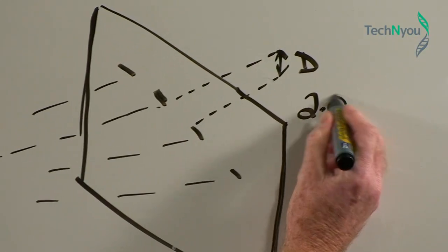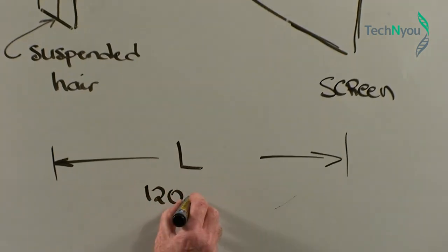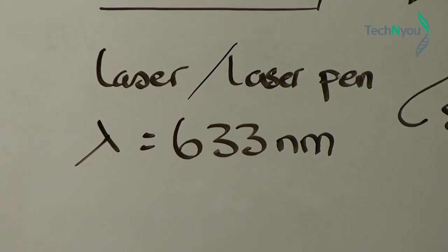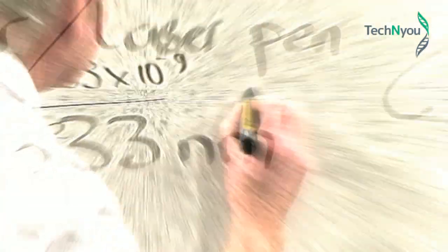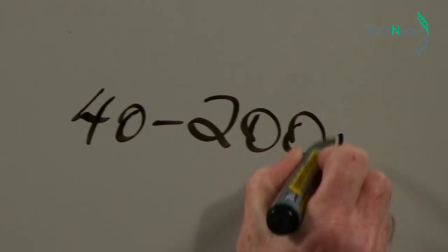Let's put some values into the formula. If D is two centimetres, and L is a hundred and twenty centimetres, and lambda is six hundred and thirty-three nanometres, the diameter of the human hair is approximately forty micrometres.